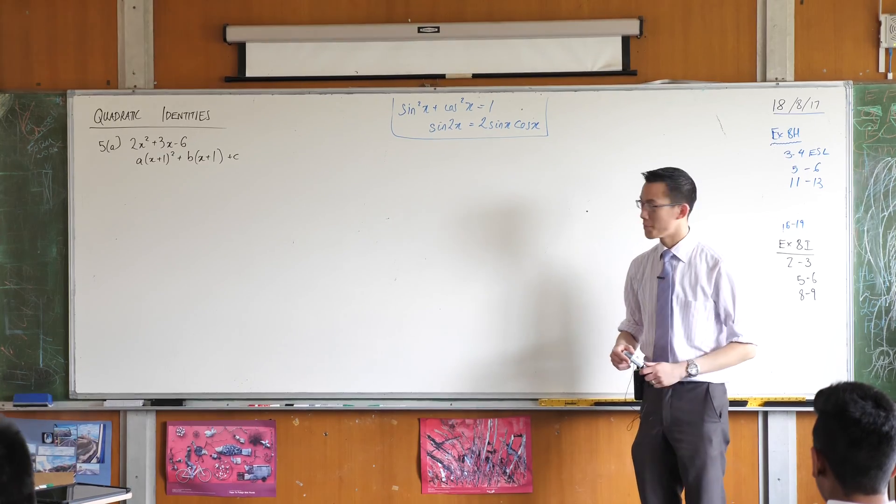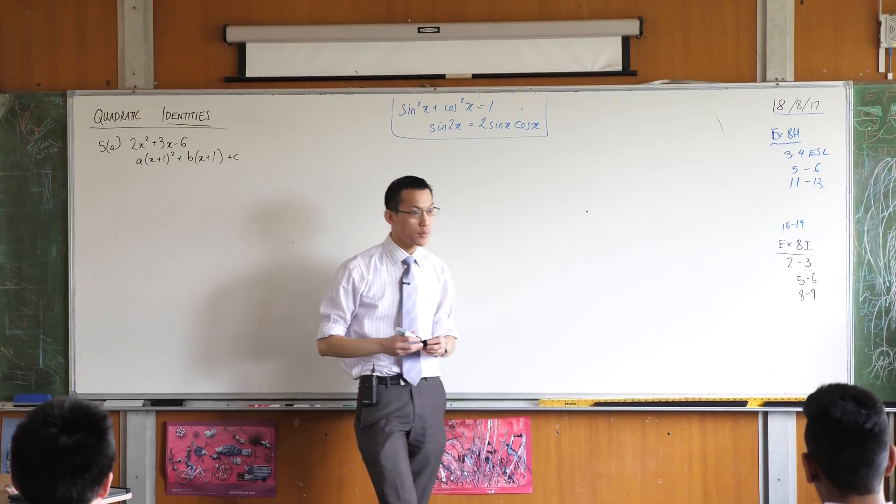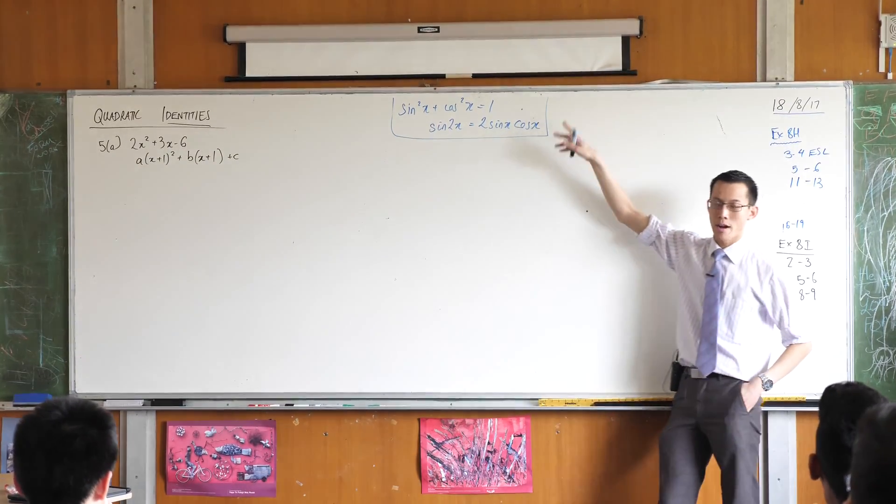This is called quadratic identities. Now we've encountered this idea of identities before and to prompt your memory I've put this up on the board, or these rather.